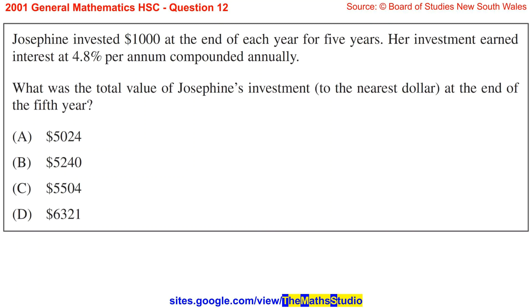Question 12. Josephine invested $1,000 at the end of each year for 5 years. Her investment earned interest at 4.8% per annum compounded annually. What was the total value of Josephine's investment, to the nearest dollar, at the end of the fifth year?